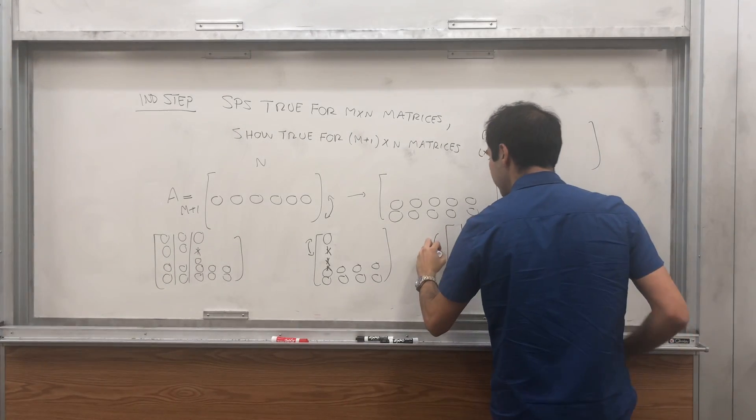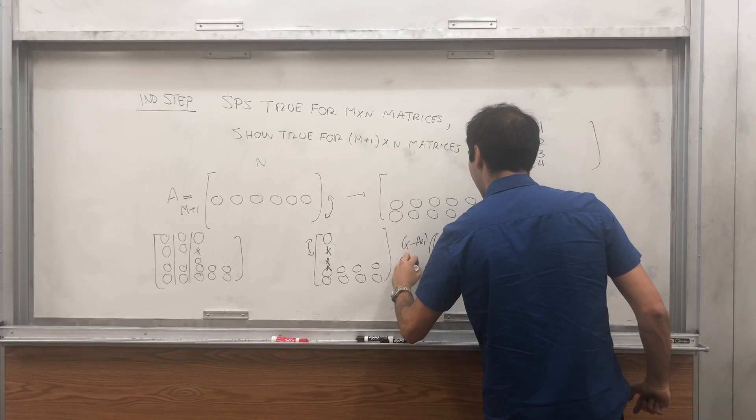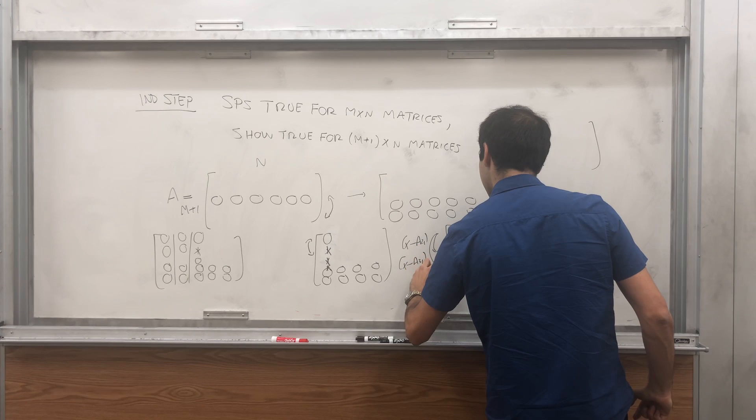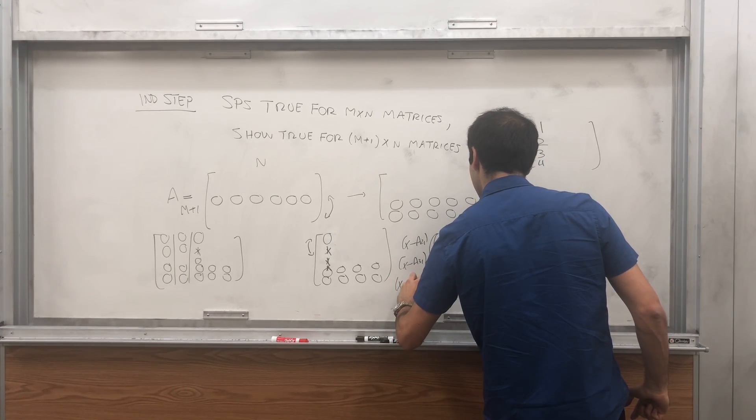And so do this and you get times minus a21, times minus a31, times minus a m plus 1, 1.